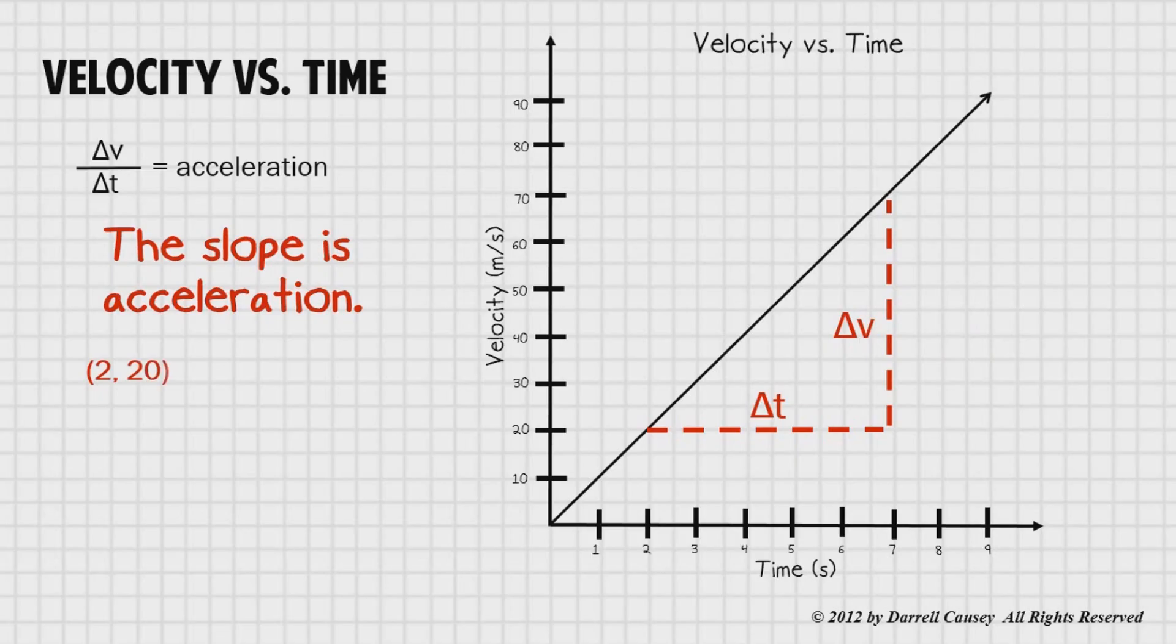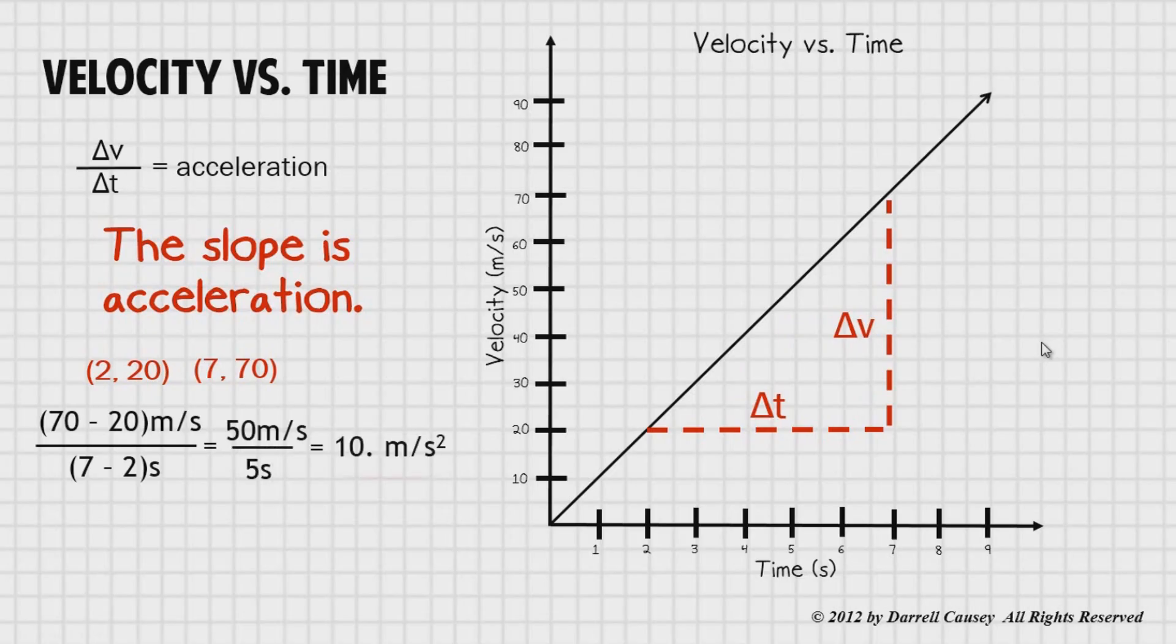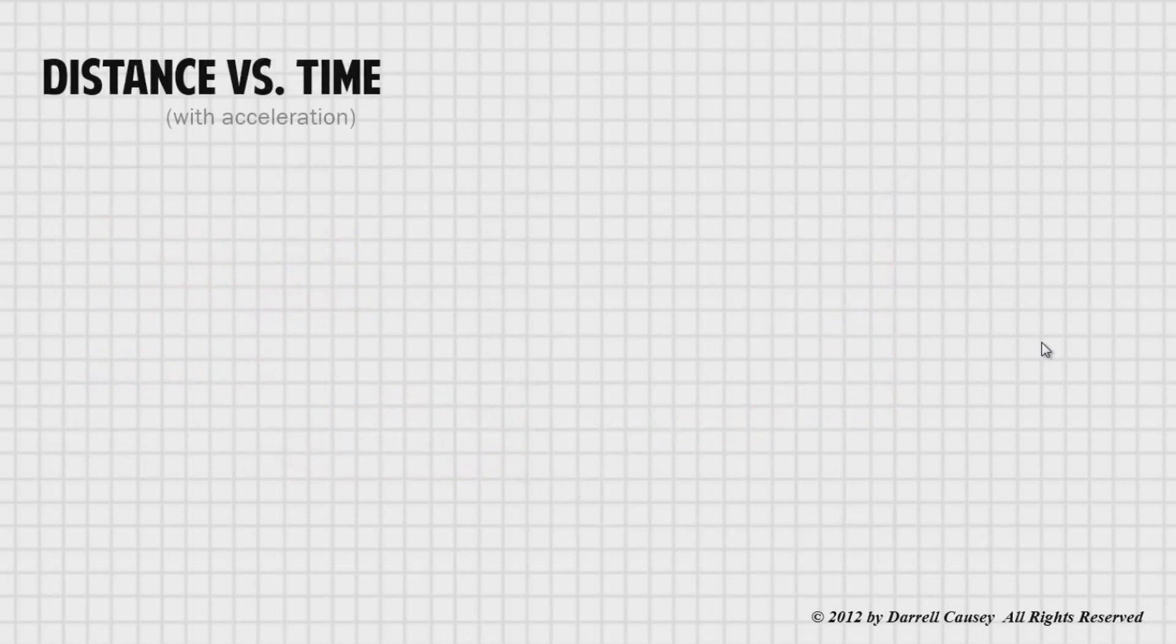Alright. Let's look at a couple points here. If we take 2,20 and 7,70, which I think you'll notice are the points right here and here, and if we work that slope out, notice the units. Let's just work that through. We get 10 meters per second squared, an acceleration. So the graph holds up and so does the calculations.